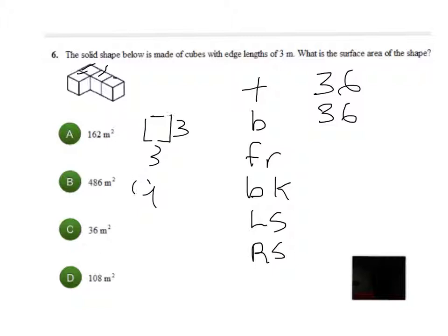So now let's do the front side. And the front side is a little tricky because with the front side, I see this face and I see this face right there. So that's two faces. Each face is 9, so 2 times 9 is 18. So my front side is 18.